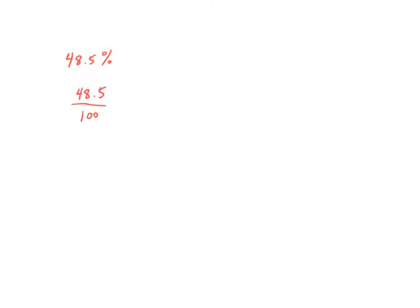So to get rid of that decimal, I'm going to multiply this by 10 over 10. When I multiply it by 10 over 10, I get 485 over 1,000.